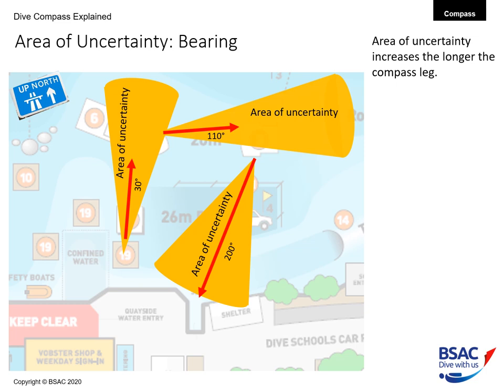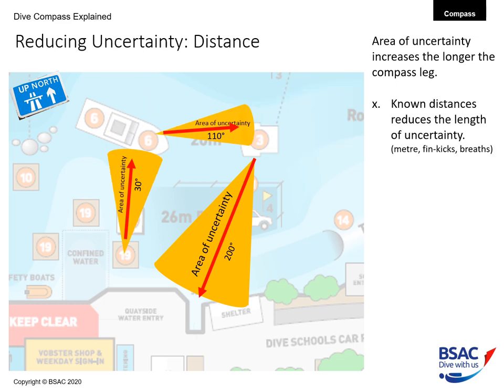To do that, we use the information recorded on our compass slate. We know the distances, which reduces uncertainty — if we know it is 50 metres to the boat, we can expect to find it after about 50 metres. Measuring distance underwater is difficult, and you may want to convert metres into fin kicks or breathing rate. There are means and methods to assist in measuring that distance.